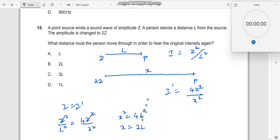So this total distance should be 2L. Now what is being asked? What distance must the person move through? From here, what is the additional distance that has been moved? Which means we should move an additional distance of L from here. So the answer is A, not 2L.